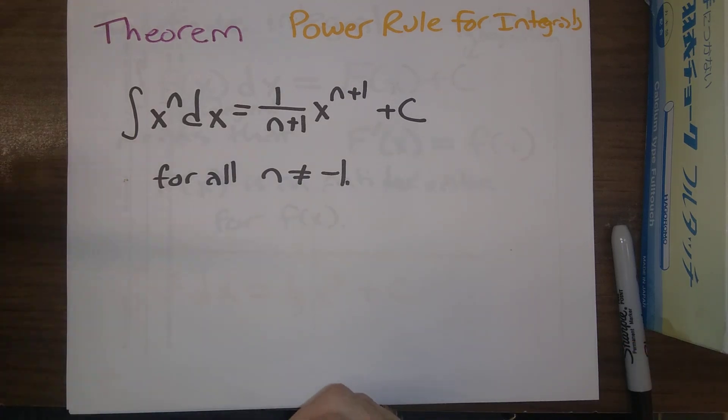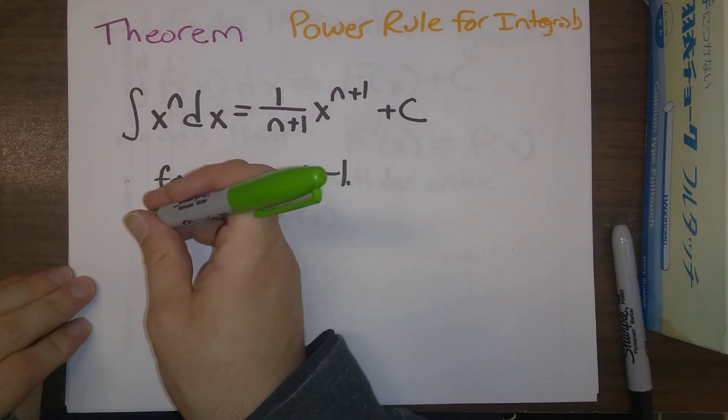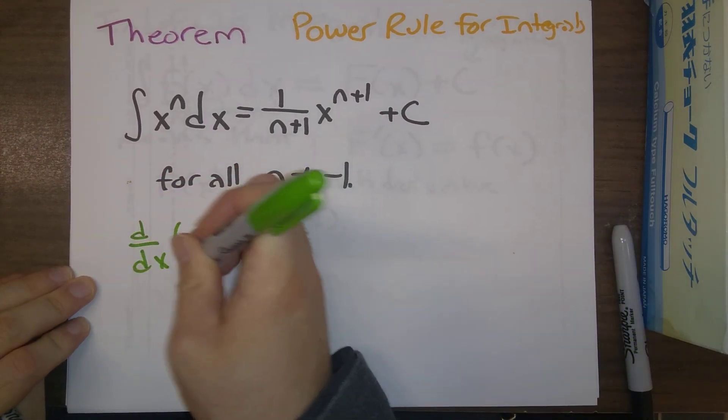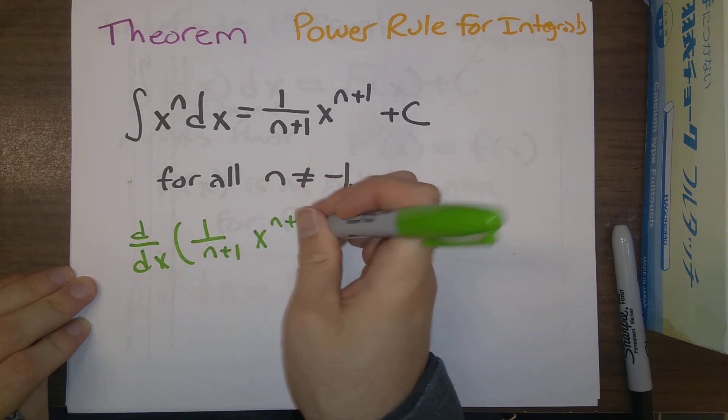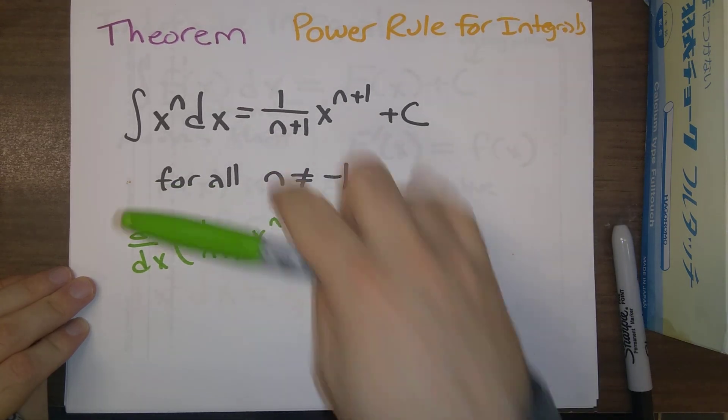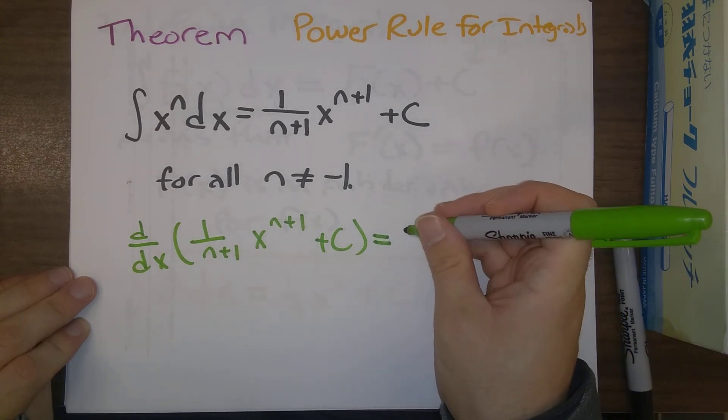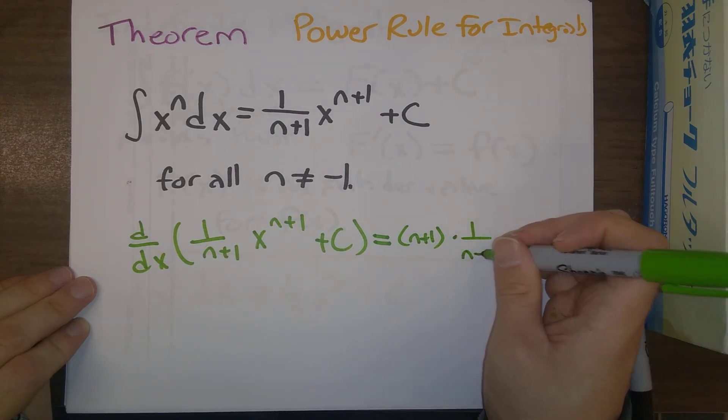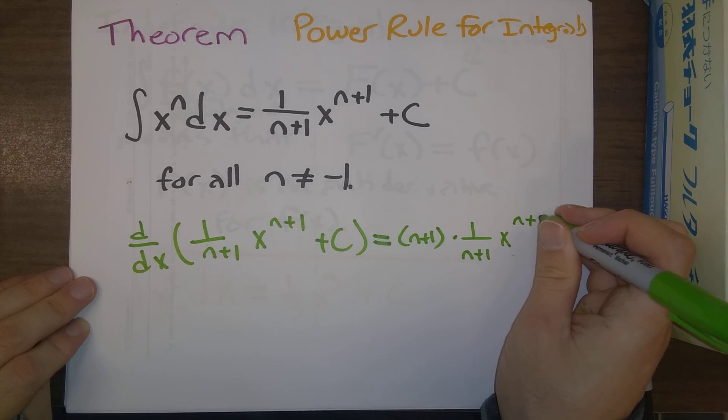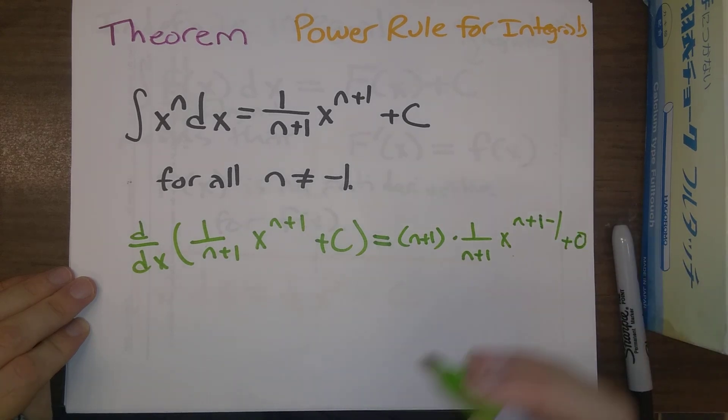Now it's a theorem here, but I'll just point out that this has a very simple proof. Why is that? If we take the derivative of 1 over n plus 1 times x to the n plus 1 plus c, if we take the derivative of the right side, we get n plus 1, bring down the exponent, times 1 over n plus 1, x to the n plus 1 minus 1, the derivative of c is 0.